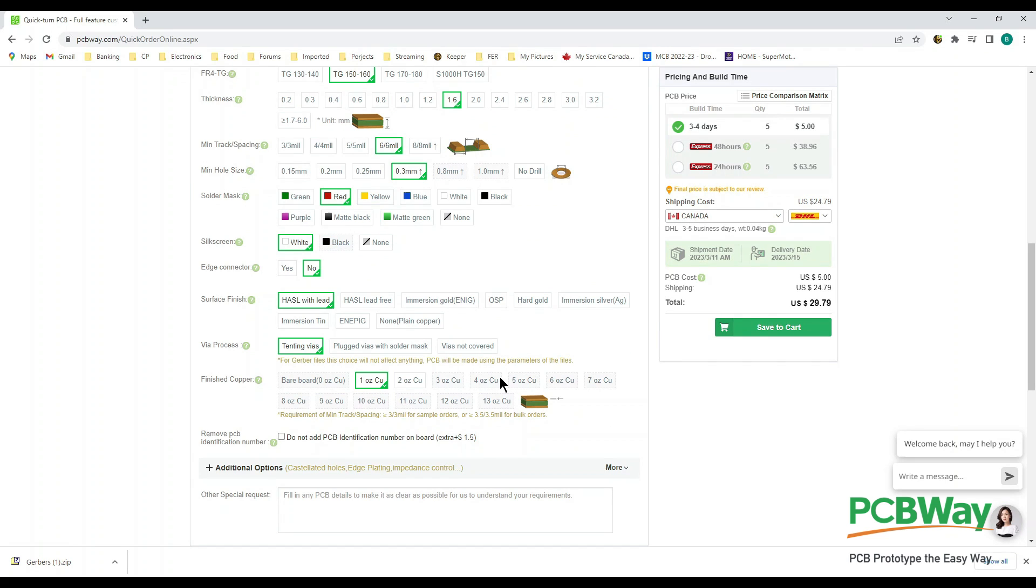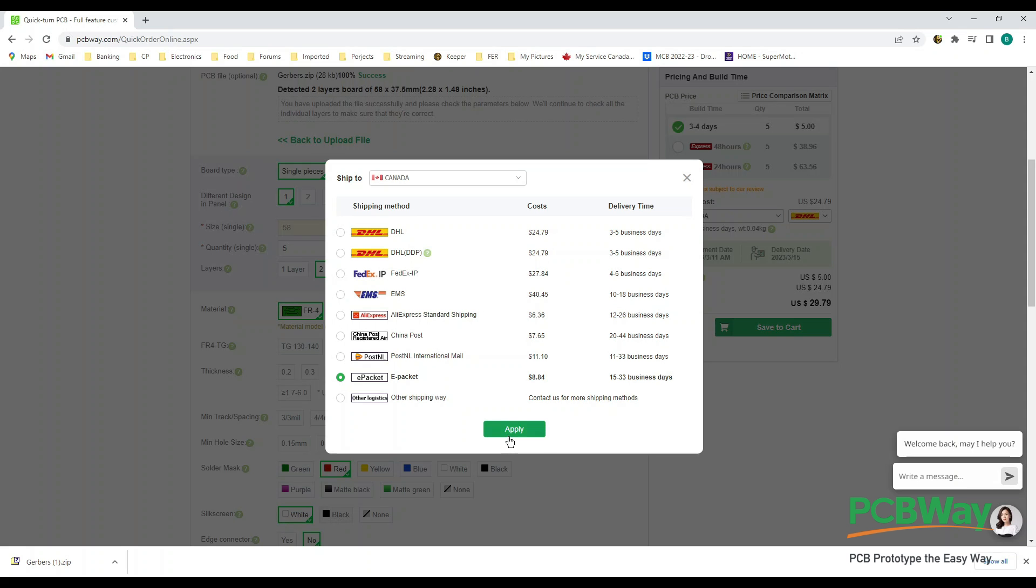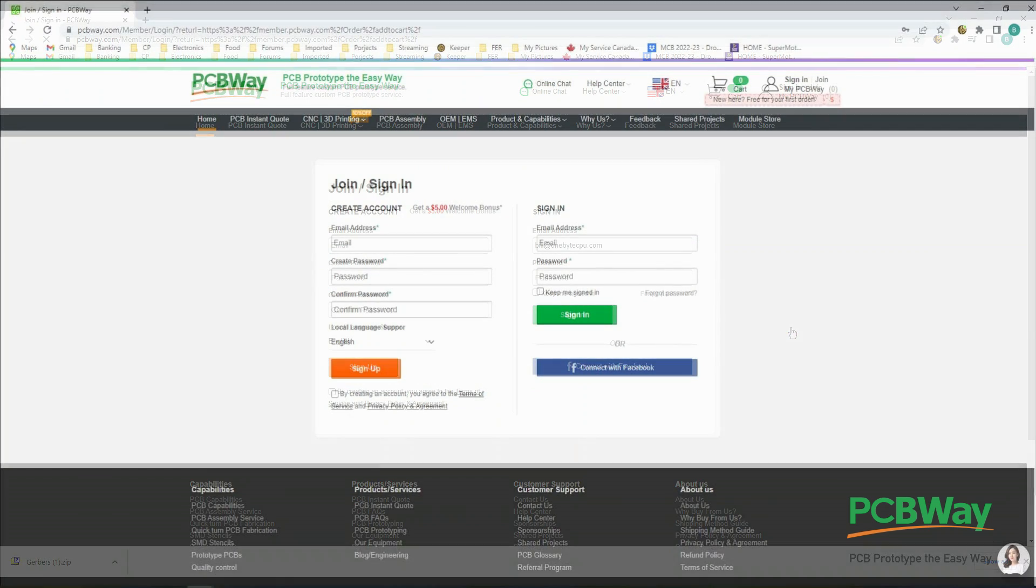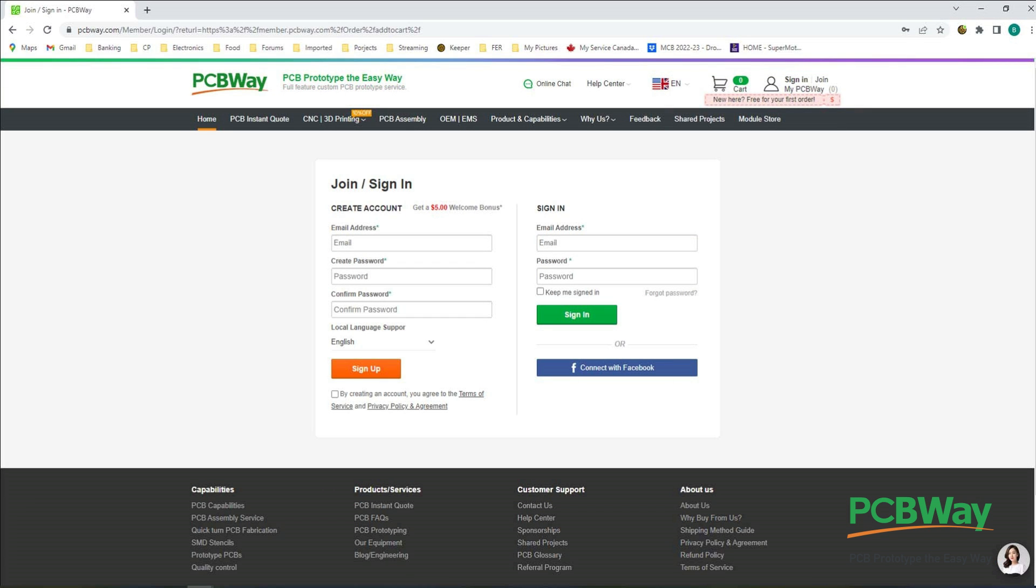Now this is about the weight of the copper or the thickness of the copper on the board. Standard for most boards is one ounce copper. Now it's just a matter of choosing your shipping method. Choose whatever shipping method you want and then save it to the cart. Then it's just a simple matter of putting in your information and paying for it. PCB prototype the easy way. It really is.